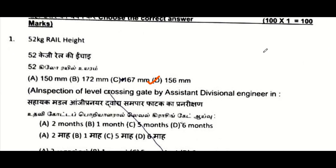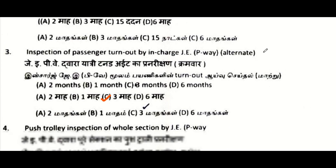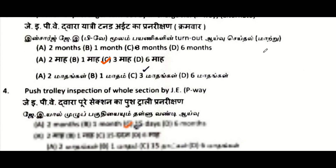The first question: what is the rail height of the 52 kg rail? That is 156 mm. Inspection of the private siding by the in-charge SLC P-way: that is six months. Inspection of passenger turnout by in-charge JE P-way on alternate basis: that is three months.